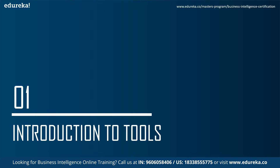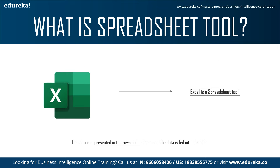Let's understand what a spreadsheet tool is. Excel is a spreadsheet tool whereas Tableau is a data visualization tool. In a spreadsheet tool like Microsoft Excel, data is represented in rows and columns and fed into different cells. Operations and manipulation can be performed using various formulas or techniques to change data into your desired form, and the manipulated data can then be converted into graphs or charts.